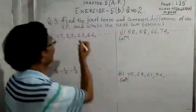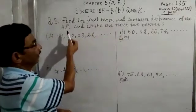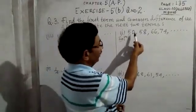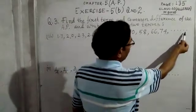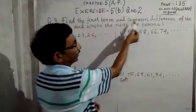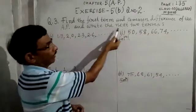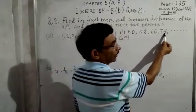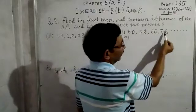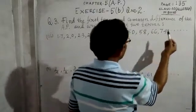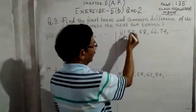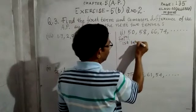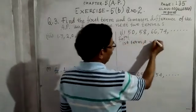Question 3, find the first term and common difference of the AP and write the next two terms. Sub-number 1: the AP is 50, 58, 66, 74... The first term is shown by the letter A, so A is equal to 50.